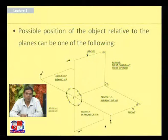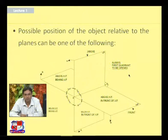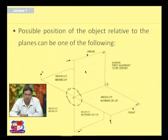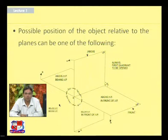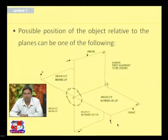We need to know the concept of the position of the object in the different quadrants. In the first quadrant: above the horizontal plane and in front of the vertical plane. Second quadrant: above the horizontal plane and behind the vertical plane. Third quadrant: below the horizontal plane and behind the vertical plane. Fourth quadrant: below the horizontal plane and in front of the vertical plane.